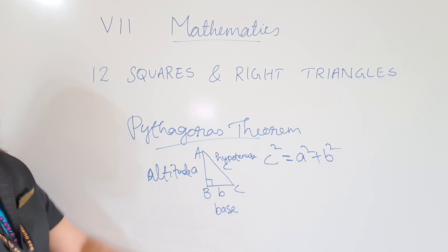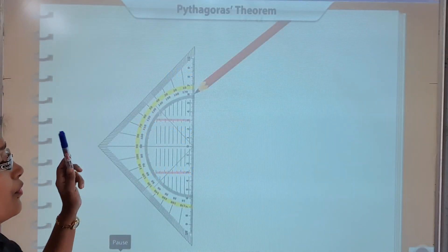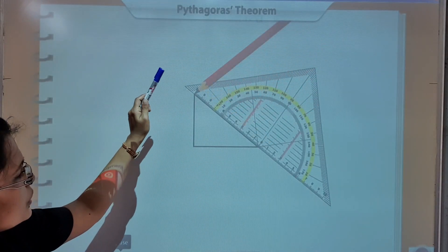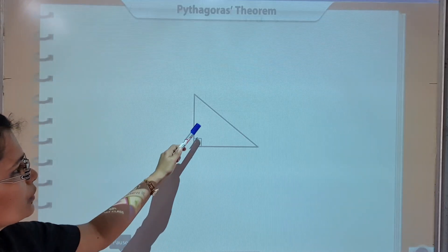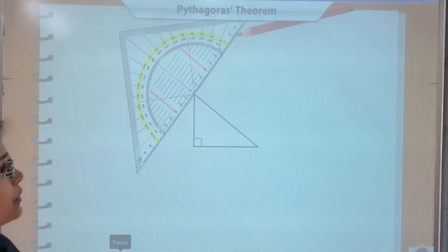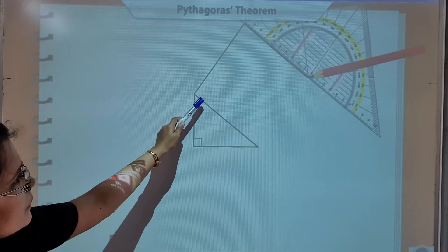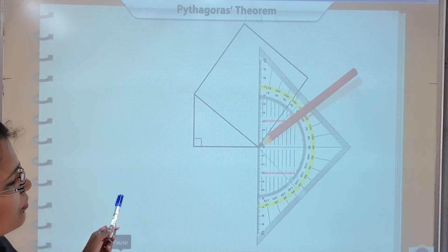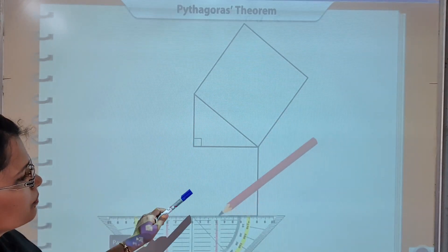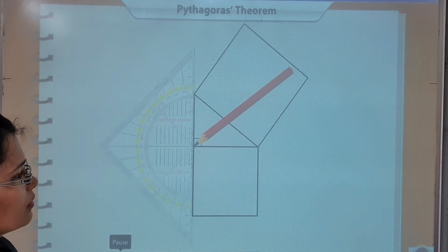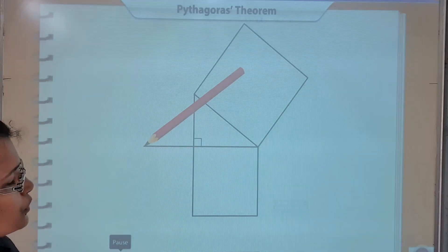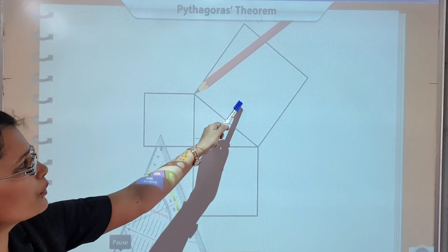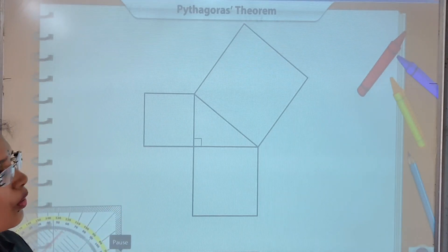I will explain this in detail. Children, first draw a right triangle. This is the base, this is the altitude, this is the hypotenuse — the side opposite to 90 degrees is called hypotenuse. Here we are making squares on each side. This is hypotenuse square, this is base square, and this is altitude square. Pythagoras theorem states that hypotenuse square is equal to base square plus altitude square.